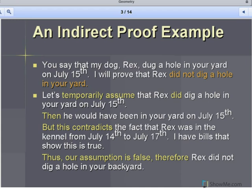So, step one. Remember, this is where we temporarily assume that the conclusion I want to prove is false. So, let's temporarily assume that Rex did dig a hole in your yard on July 15th. Okay. Now, the next part is where I'm going to reason logically until I can show a contradiction that's going to disprove that.